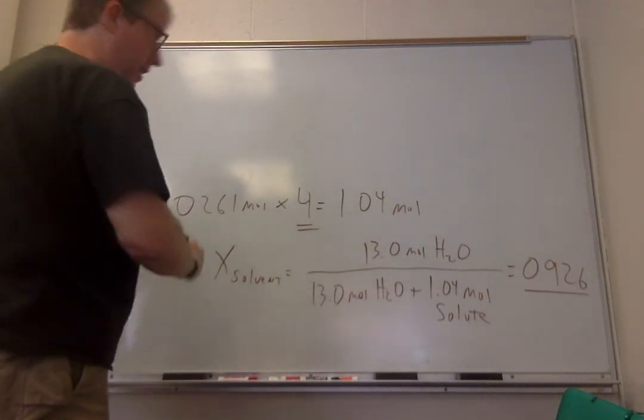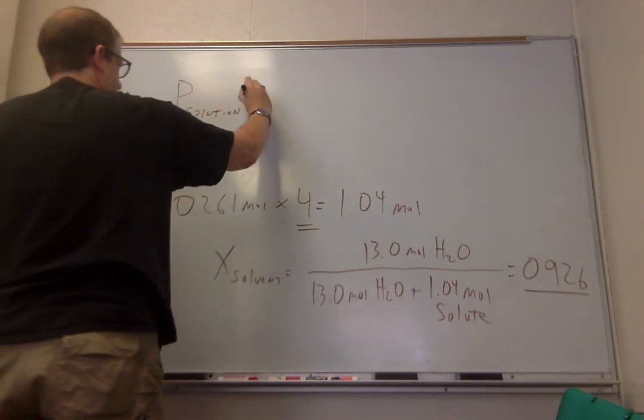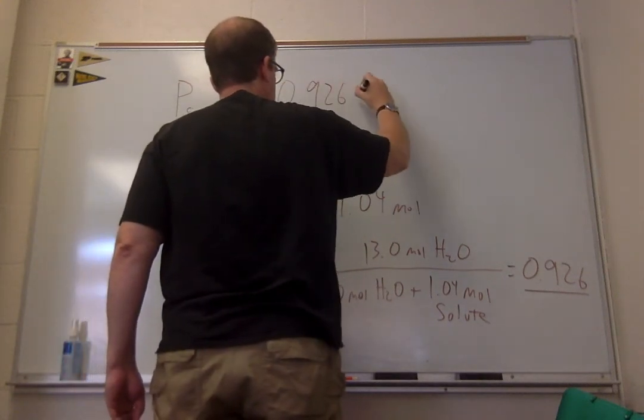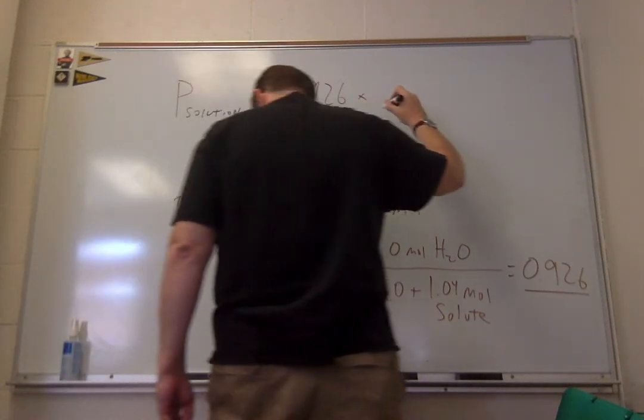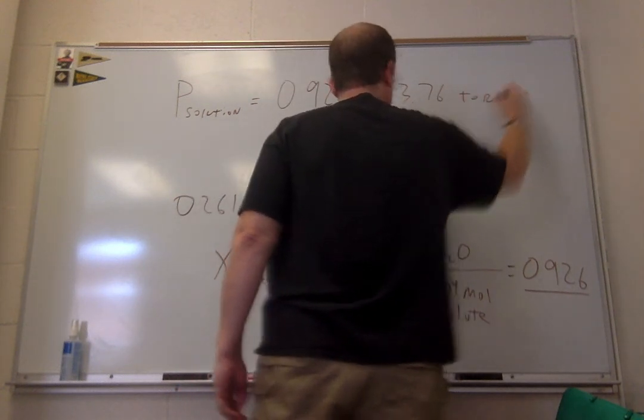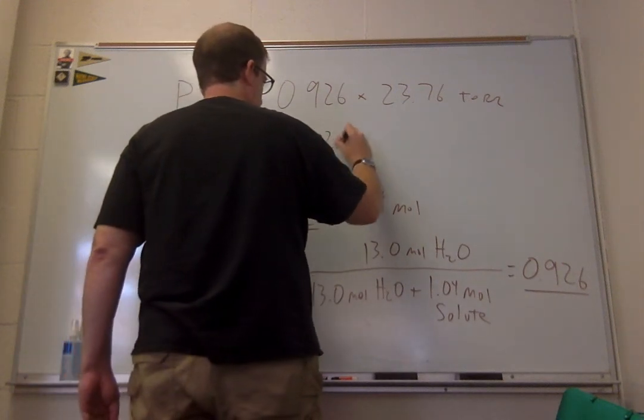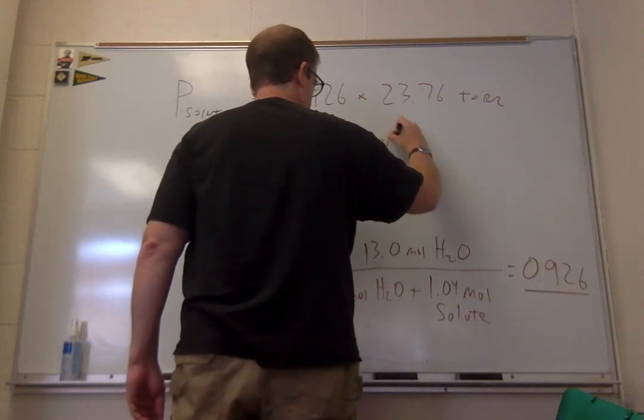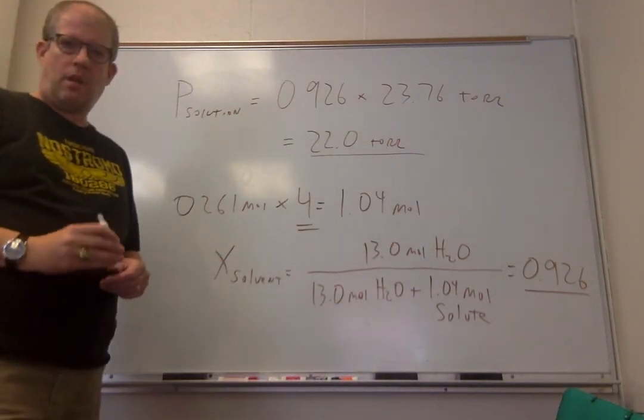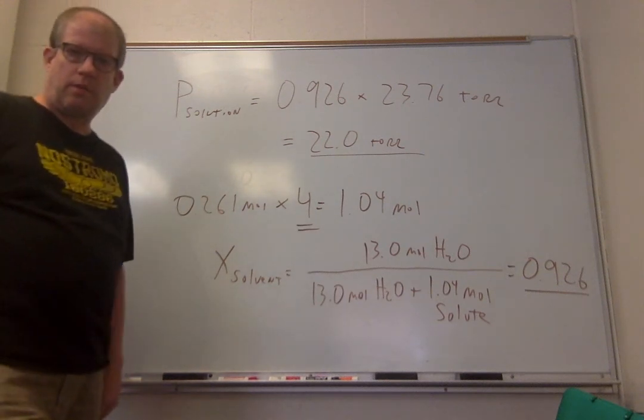So now we plug that into the equation that was originally up here. I'll write it out, and you're going to get 22.0 torr. So that's how one does a problem when you have an electrolyte dissolved in the solution. And hopefully that helps with clarity of doing one of these problems.